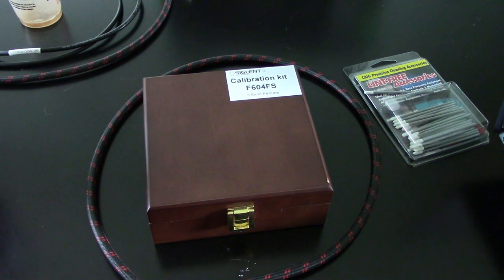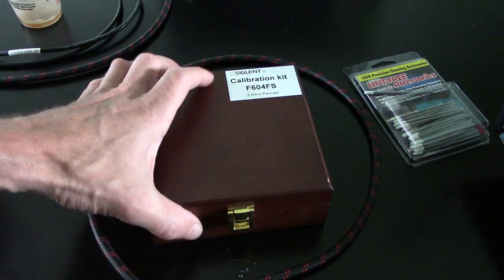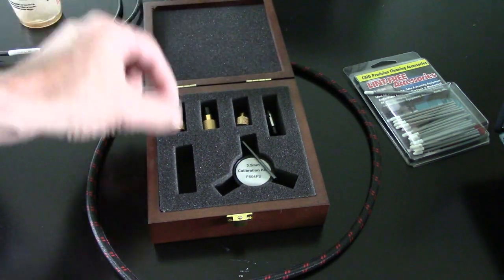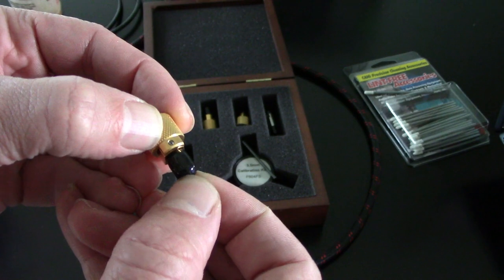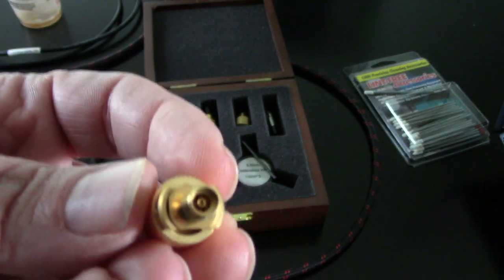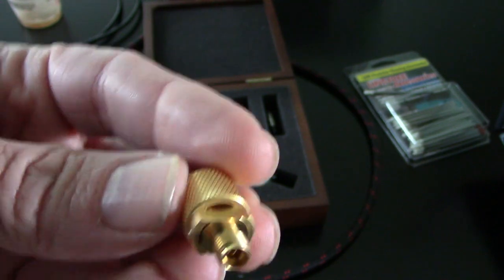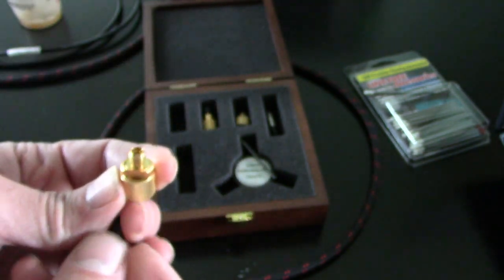Here we've got a Siglent F604FS female calibration kit. This is a three and a half millimeter. Each of the short, open, and load elements have a cap. We want to remove that rubber element and you can see with the three and a half millimeter there's air as the dielectric between the center conductor and the outer. We've got some gold plating or metalized plating to help longevity.